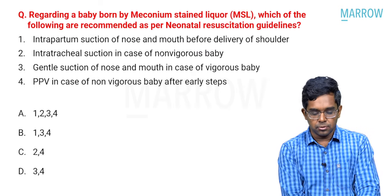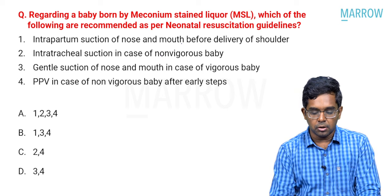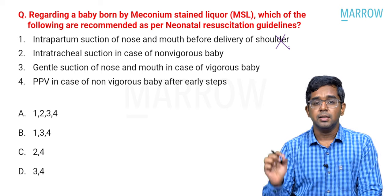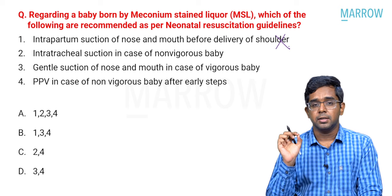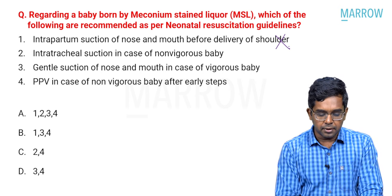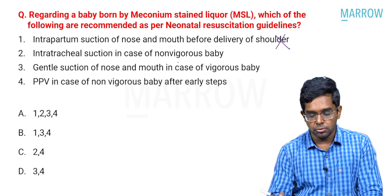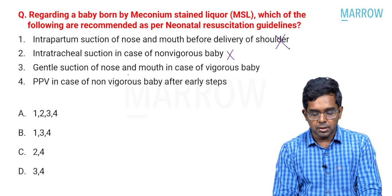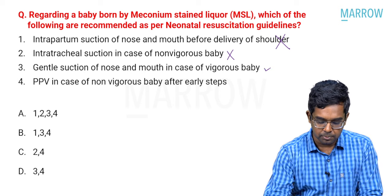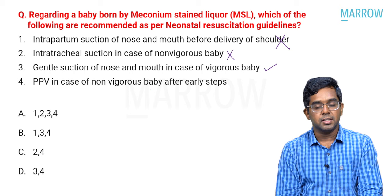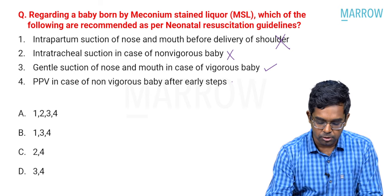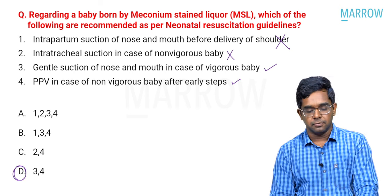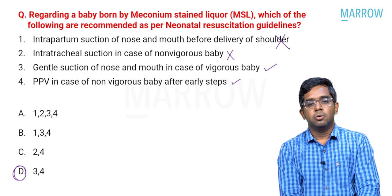Going back to the question: intrapartum suction of nose and mouth before delivery of the shoulders — this is never recommended for any baby. Intratracheal suction in a non-vigorous baby — routine intratracheal suctioning is not needed, so that is also a wrong statement. Gentle suction of nose and mouth in a vigorous baby — that is a true statement. PPV in a non-vigorous baby after initial steps — also a true statement. The answer is option D, including statements 3 and 4.